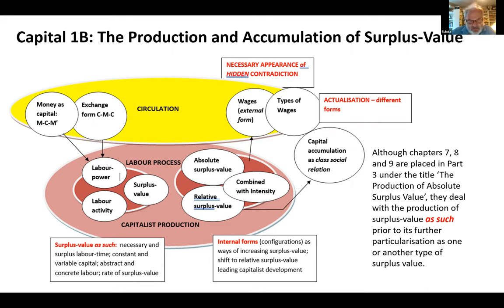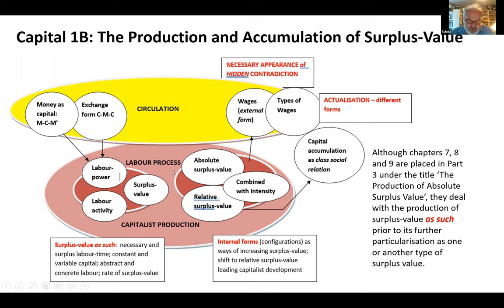Marx has three connected concepts: the distinction between labor power as a commodity and its use in production as labor activity creating more value, and because it creates value it's possible to extend that to surplus value. From this general concept of surplus value as an initial outline, Marx is going to introduce two different aspects to surplus value.